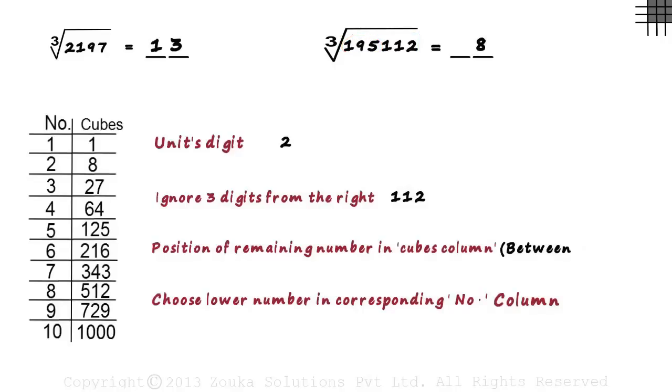Now where is 195 placed in the cubes column of the table? It is placed between 125 and 216. That is, it is placed between 5 cubed and 6 cubed.